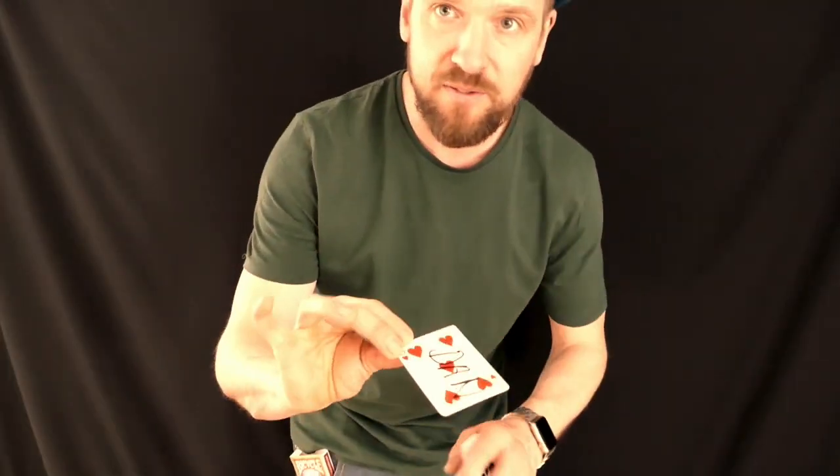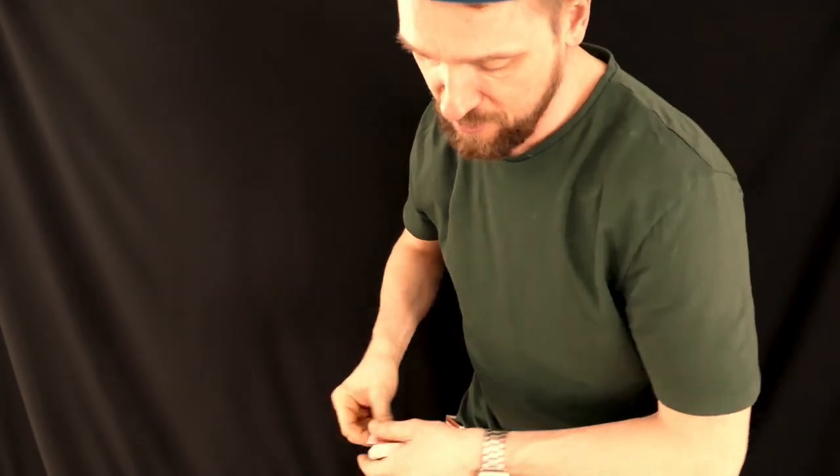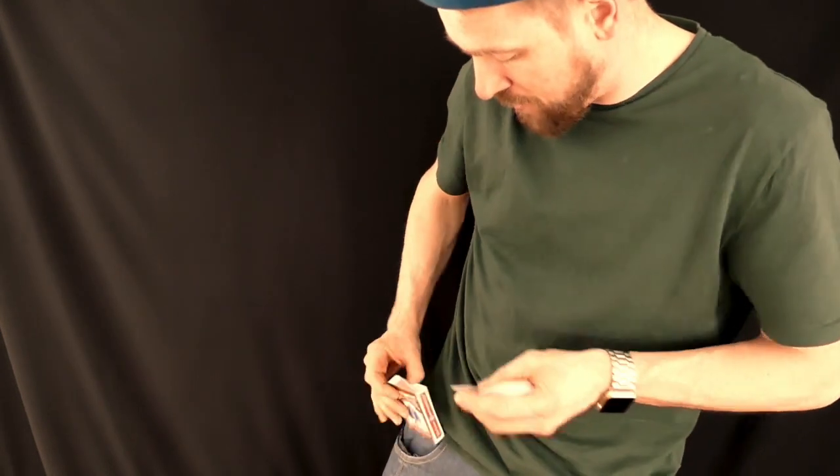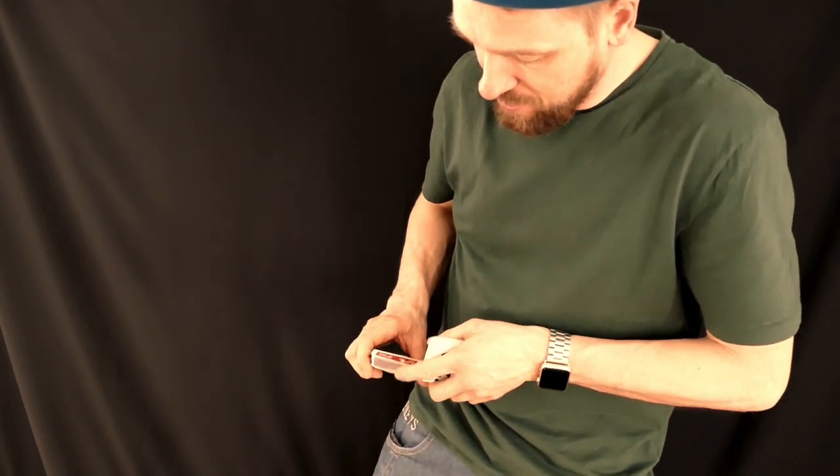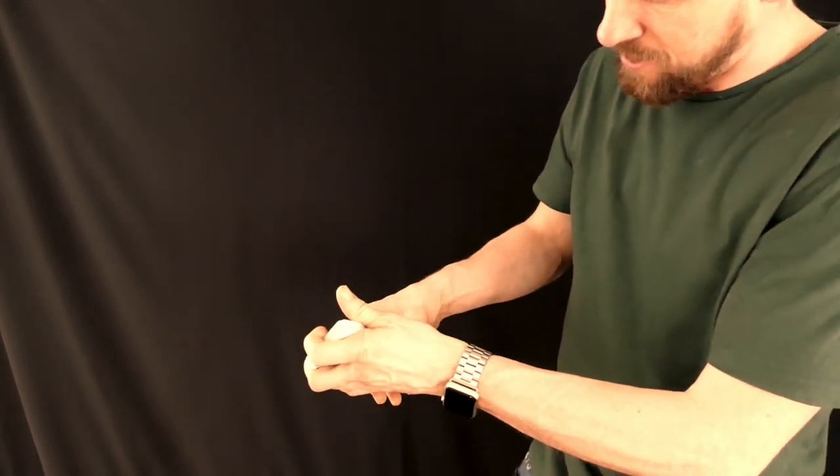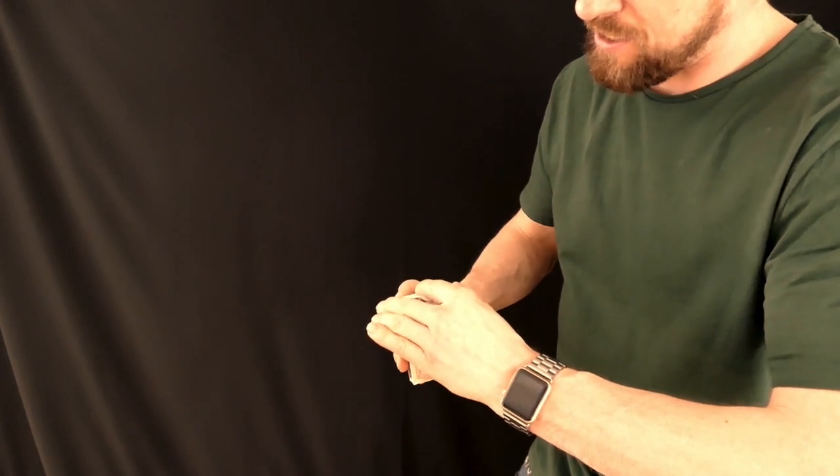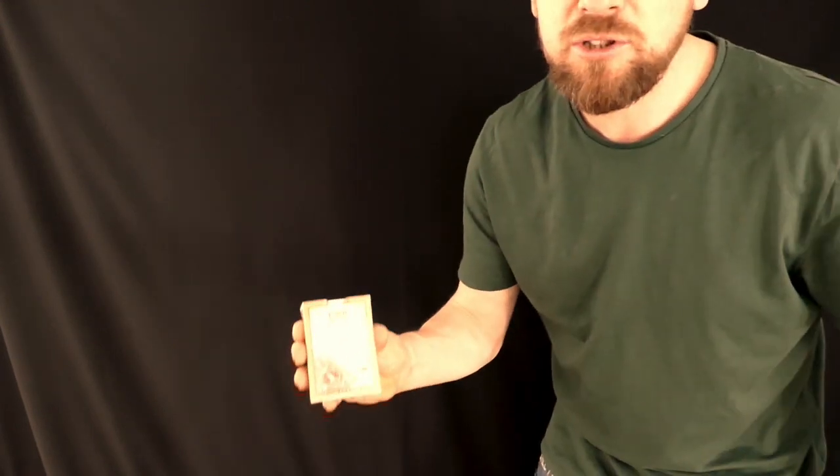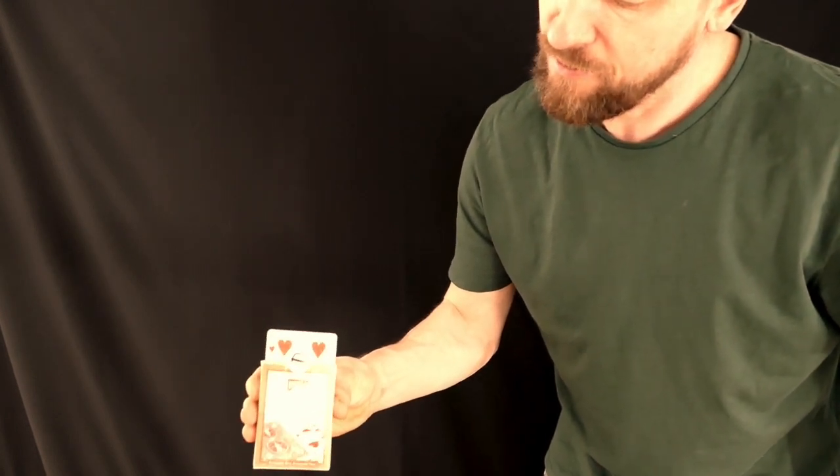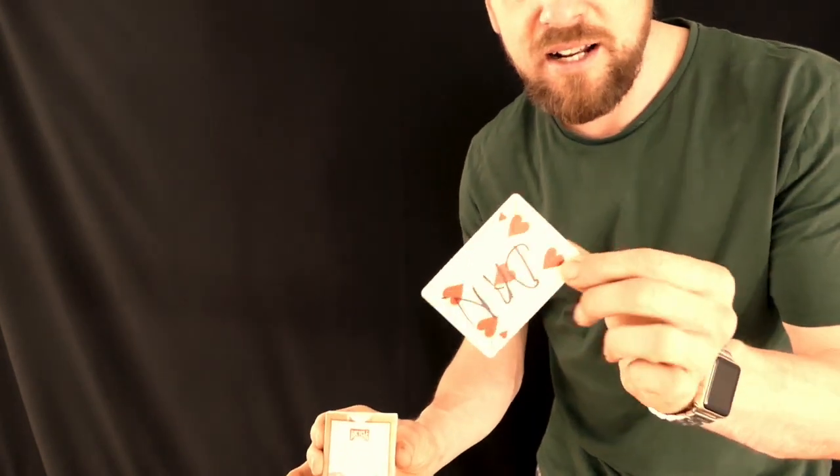Okay so for this effect the spectator writes a name on the face of the card. The card goes about halfway into the pack just like so. Take from my pocket the box, you can see the box, you can see the box inside is completely empty. I take the cards, place them inside the box. All I've got to do is take these cards from here, give them a little shake, and slowly but surely one card rises from the pack and it is in fact their selected card.